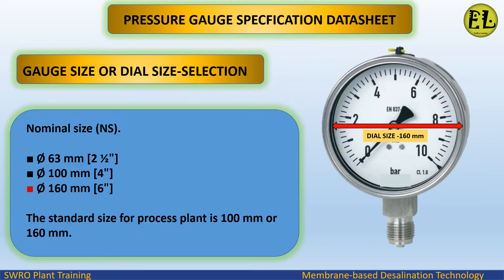Gauge size or dial size selection. Nominal sizes available are: NS 63 mm (2½ inches), 100 mm (4 inches), and 160 mm (6 inches). The standard size for a process plant is 100 mm or 160 mm. We select 160 mm for this application.